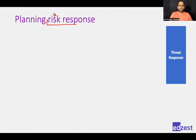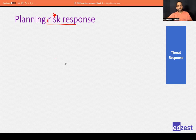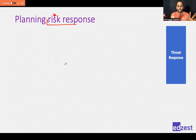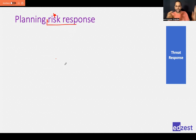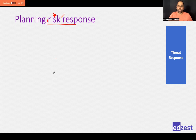Now let us talk about risk responses. When the team identifies a risk, they have to take some response. You cannot say you have identified the risk and ignore it — that is not good project management. You will always take some response. The question is what kind of responses you will take — this is one of the confusing parts that many people have reported.